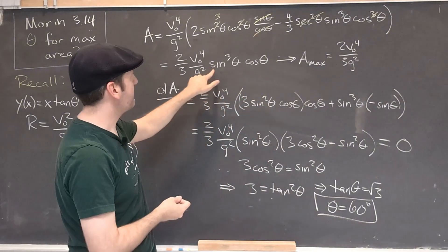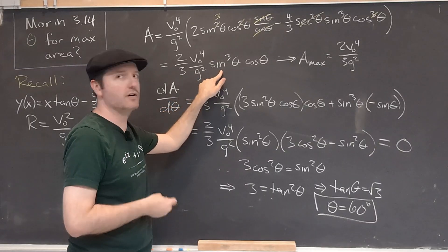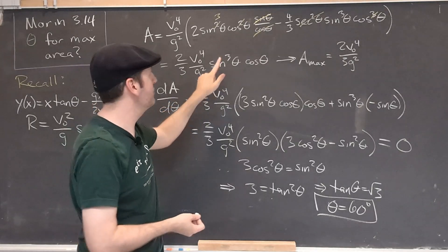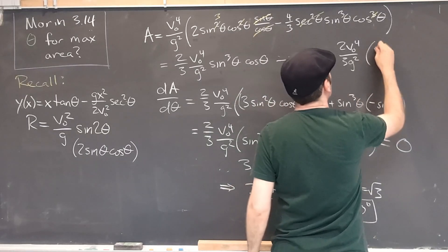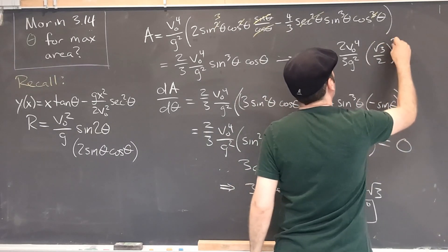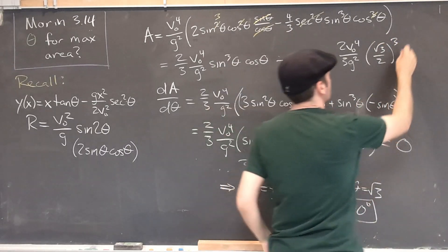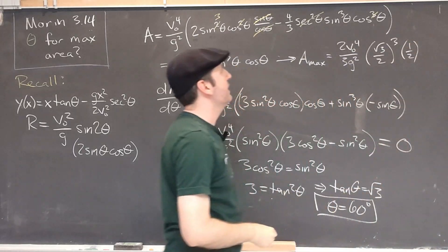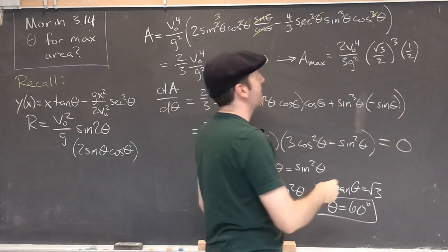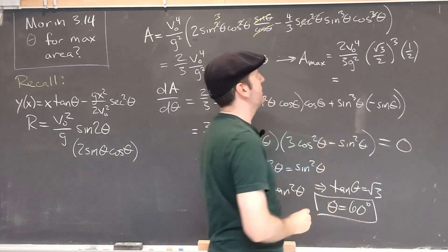Finally, we've got to plug in these values. The sine of 60 degrees is also a well-known function. That's root 3 over 2. That is cubed. And then the cosine of 60 is also well-known to be 1 half.